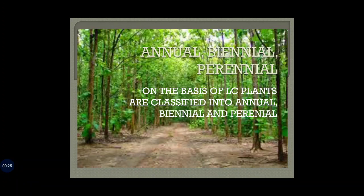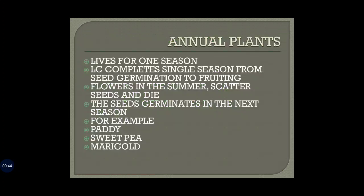We are going to study about plants which are annual, biennial and perennial, and this depends upon the life cycle or the life longevity of a plant. The first one is the annual plants — plants whose life is just for one season. The life cycle of such plants completes in a single season, right from seed germination to flowering and fruiting.